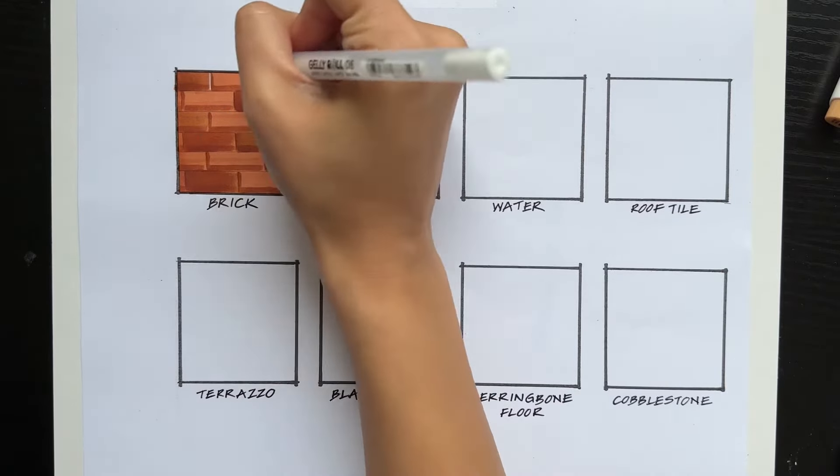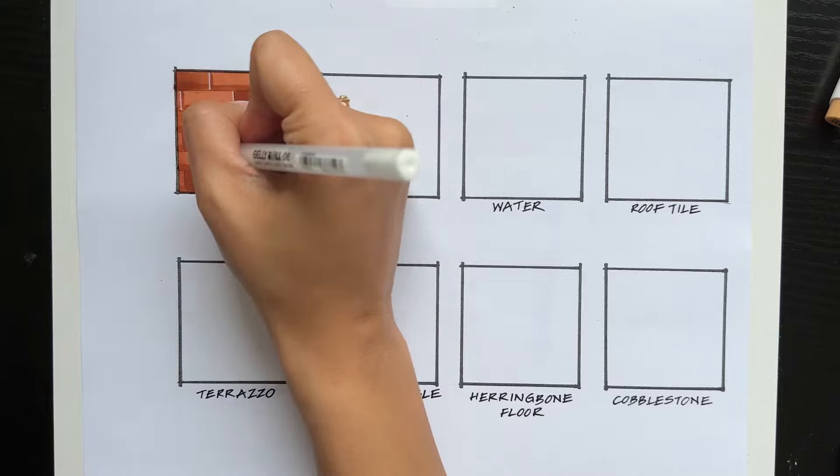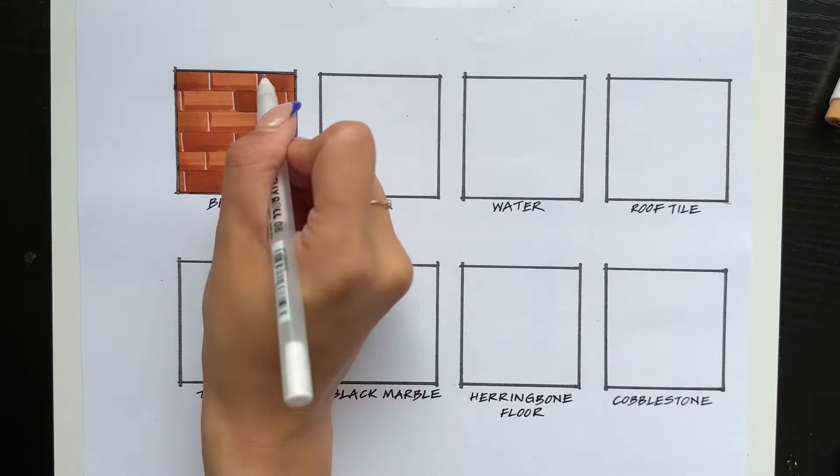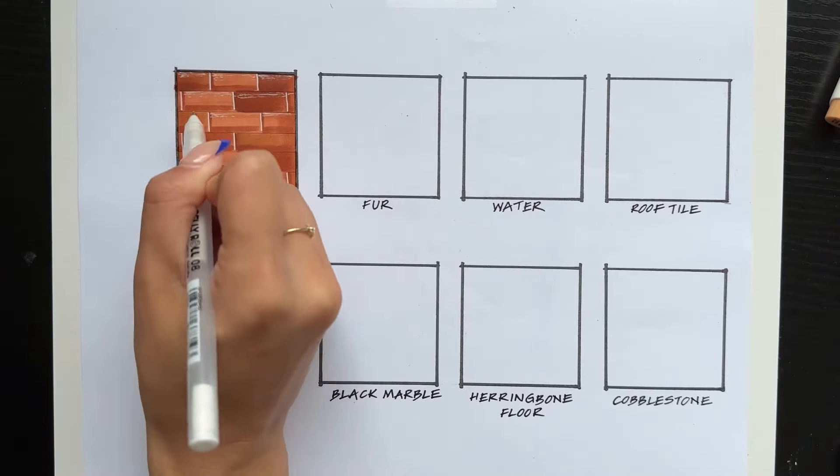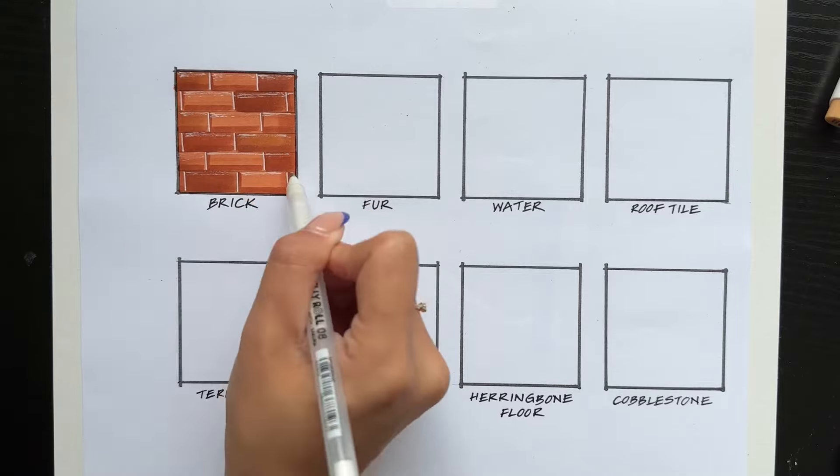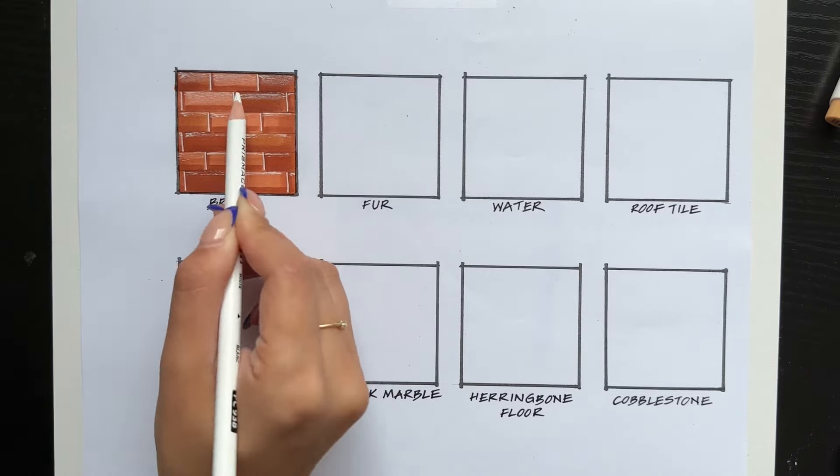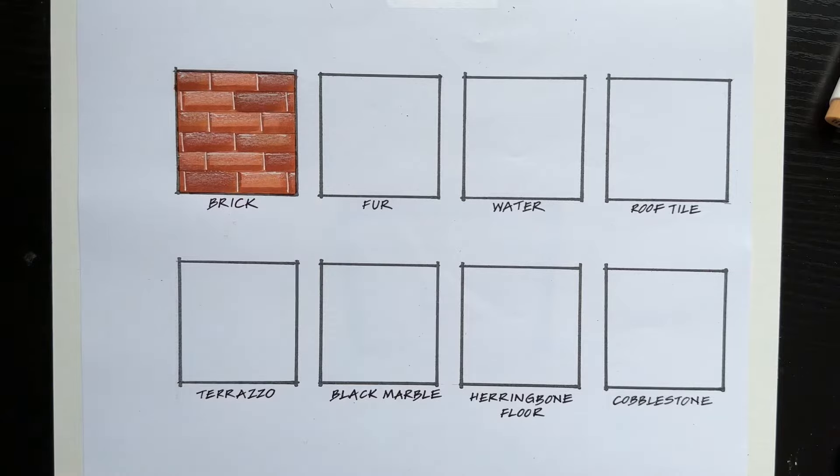After that, take a white gel pen and highlight the vertical parts of the brick, and then lightly go over the top part of the brick with the white gel pen, and you can do the same thing with a white pencil crayon.